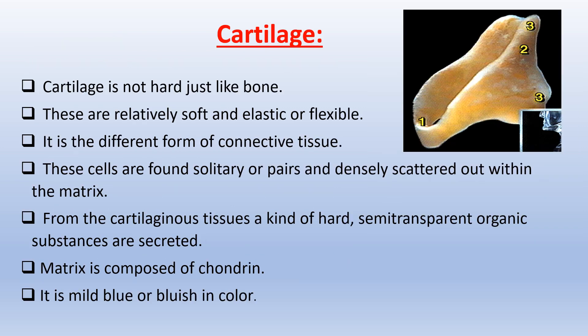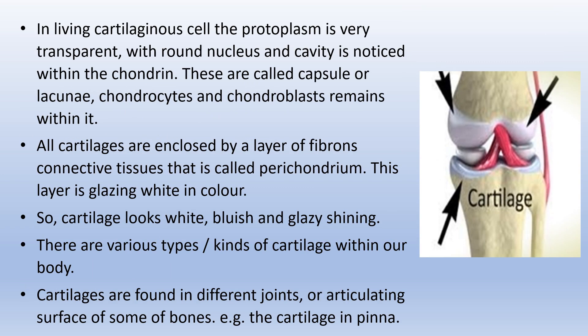Cartilage is not hard like bone. It is relatively soft and elastic or flexible, and is a different form of connective tissue. Cartilage cells are found solitary or in pairs, densely scattered within the matrix. From the cartilage tissue a kind of hard semi-transparent organic substance is secreted. The matrix is composed of chondrine. It is mild blue or bluish in color. In living cartilage cells the protoplasm is very transparent with a round nucleus, and a cavity called a capsule or lacunae is noticed within the chondrine. Chondrocytes and chondroblasts remain within it. All cartilages are enclosed by a layer of pipeless connective tissue called perichondrium, which is glazing white in color, so cartilage looks white, bluish, and glazy shining. Cartilages are found in different joints or articulating surfaces of some bones, such as the cartilage in the pinna.